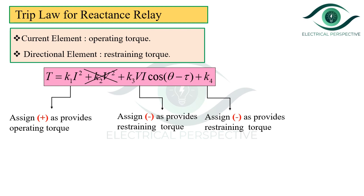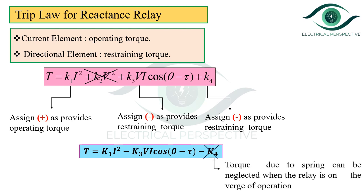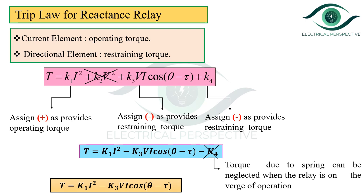We also assign a negative sign to K4 because it provides restraining torque — it is the restraining torque provided by the spring. Thus we get T = K1·I² − K3·VI·cos(θ − τ) − K4. Neglecting the spring torque when the relay is on the verge of operation, we get T = K1·I² − K3·VI·cos(θ − τ).